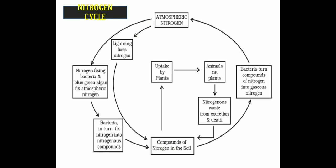In the other cycle, lightning fixes nitrogen directly into the soil. Plants grow in this nitrogenous soil and are eaten by animals. When these organisms die, nitrogen is released as waste or through excretion and returns back to the soil. In this way the complete nitrogen cycle keeps on continuing.